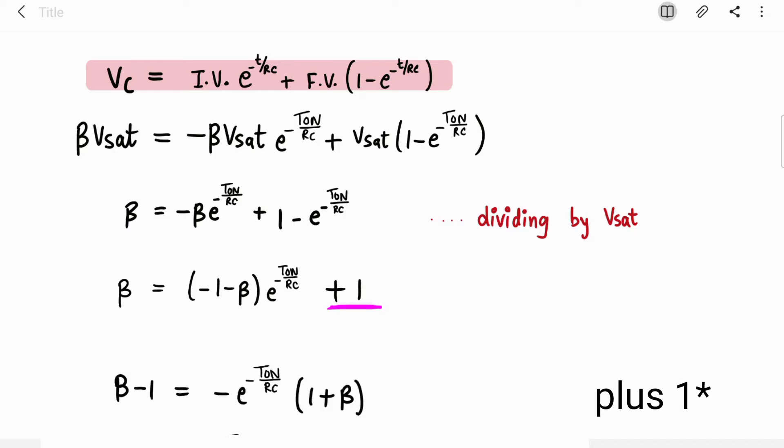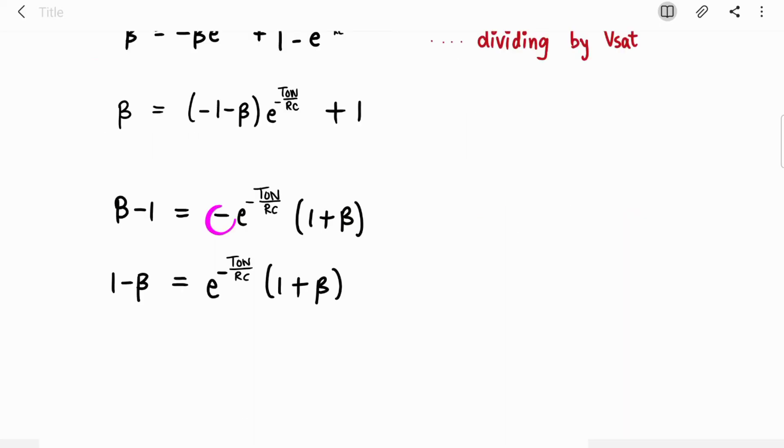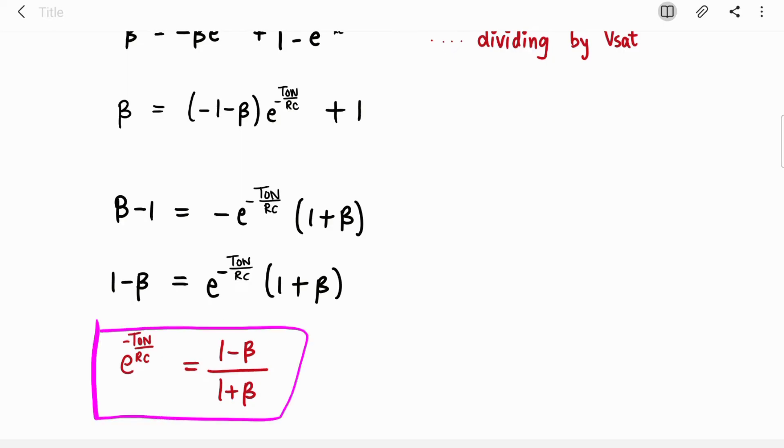I am sending this plus 1 on the left hand side, so it becomes beta minus 1. On the right hand side I pulled out this minus sign out of the bracket, so we have minus E in the bracket 1 plus beta. Now I sent this minus sign to the left hand side, so it became 1 minus beta. Just send this 1 plus beta to left hand side, so E will remain alone. It will be 1 minus beta upon 1 plus beta on the right hand side.